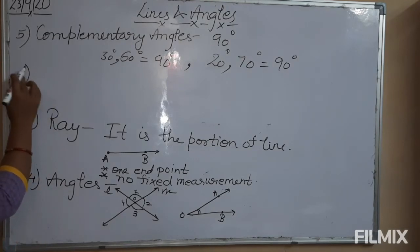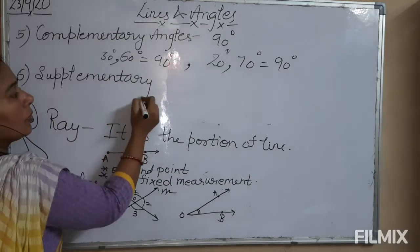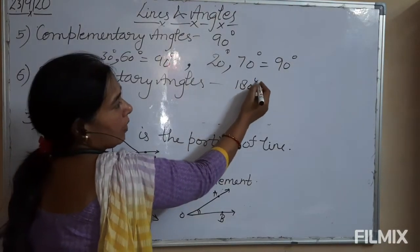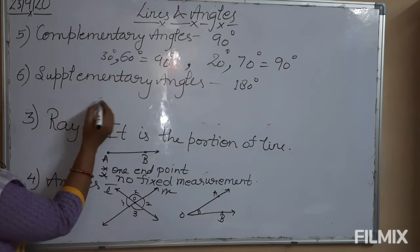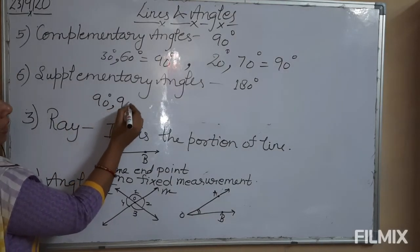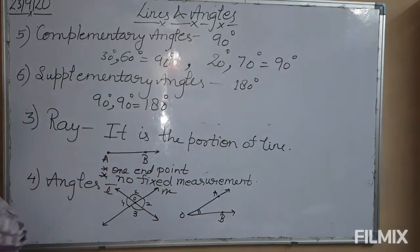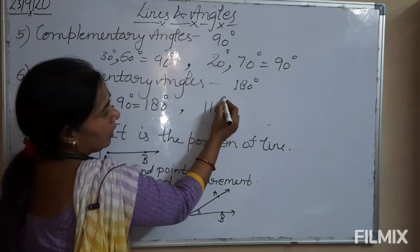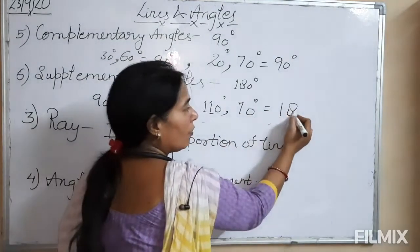Next is sixth point, that is supplementary angles. Same as complementary angles, but in supplementary angles the sum of two angles is 180 degrees. If two angles ka sum 180 degree ho, then that pair is called supplementary angles. For example, first angle is 90 degrees, its supplementary angle is again 90 degrees, because their sum is 180 degrees. Another example: if first angle is 110 degrees, the supplement is 70 degrees, and their sum is again 180 degrees.